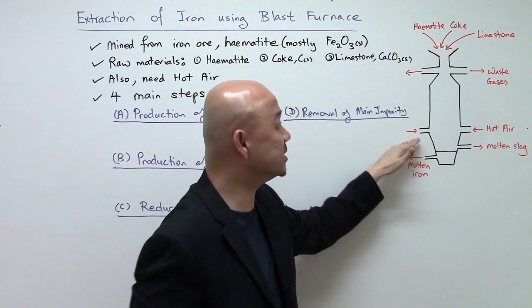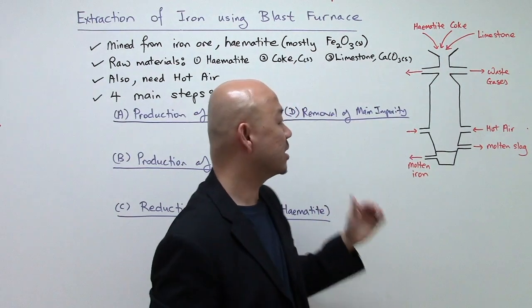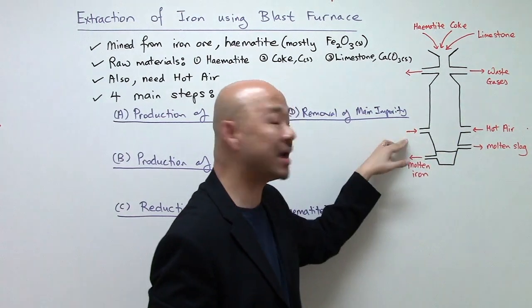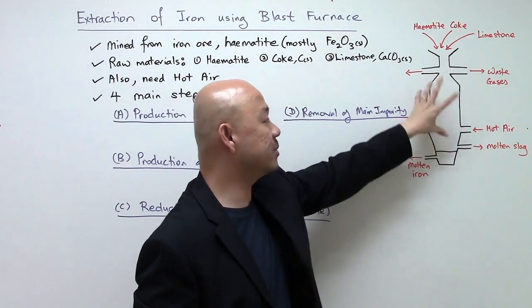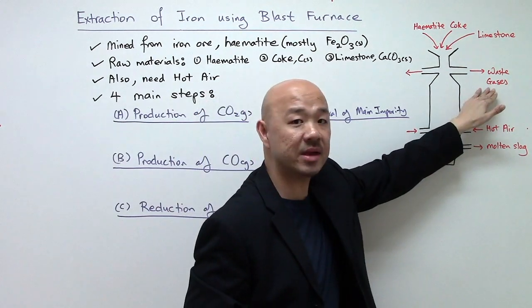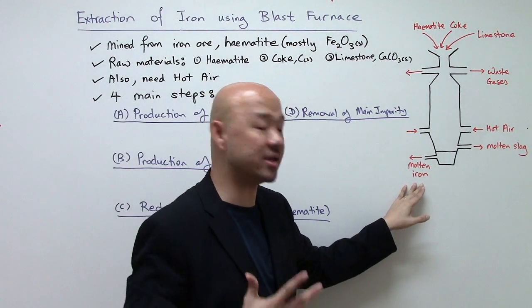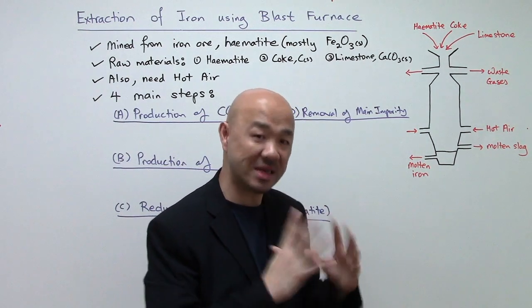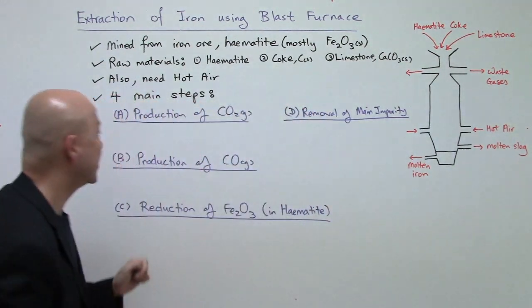At the top of the blast furnace we add the raw materials: hematite, coke, and limestone. Hot air is pumped in near the bottom, containing 21% oxygen. Chemical reactions occur inside, producing waste gases coming out at the top. The products are molten iron — which is what we want — as well as something known as molten slag.